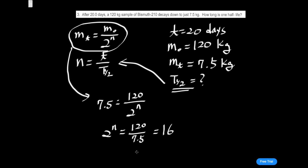Okay, so we have 2^n is equal to 16. So n is 4. Okay, so we need 4 half-lives. So n equals 4.